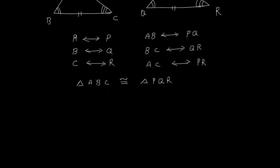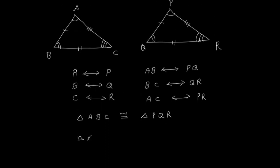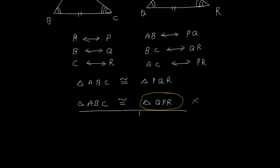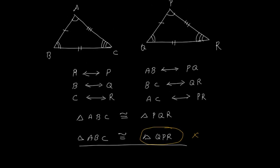Here triangle ABC is congruent to triangle PQR. But if I write triangle ABC congruent to triangle QPR, that statement is not correct — even though I am talking about the same triangles. You have to write the names of the triangles according to their corresponding parts. If I write triangle ABC congruent to triangle PQR, then from this statement I understand that angle A equals angle P, angle B equals angle Q, angle C equals angle R, side AB equals PQ, side BC equals QR, and side AC equals PR.